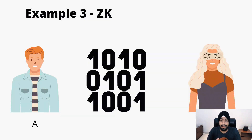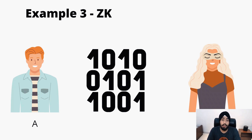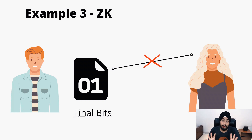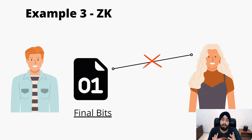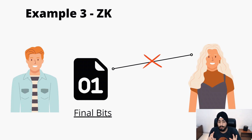In example number three we again have person A and person B, a prover and a verifier. Here we have a number of bits — computers only understand bits, that is numbers in the form of zero and one. Person A knows two specific bits but person B has no idea what those bits are. Person A has chosen two bits — as you can see in the diagram, he has chosen zero and one — but person B is unable to see what those bits are.